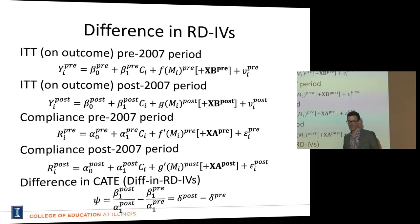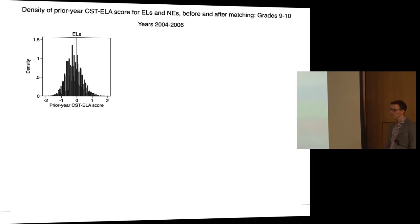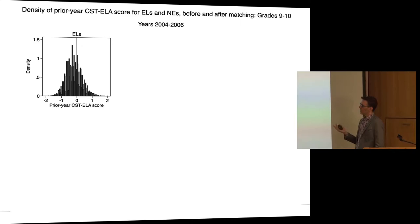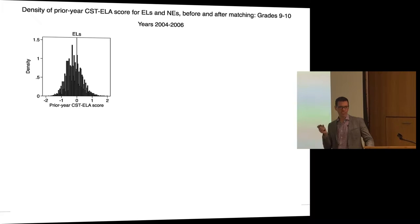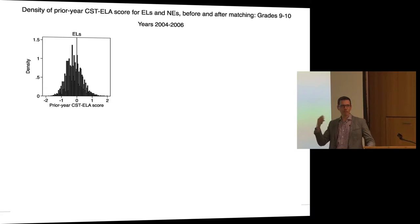I also want to highlight a density check and how we account for something else that happens. When kids attain a CST score of 300, they move from being labeled below basic to basic. Work by John Papay suggests that RD effect of the label change can actually have some effect on outcomes. We want to make sure we account for any labeling effect that might happen regardless of whether or not kids are reclassified, as well as any tracking that occurs outside of reclassification.